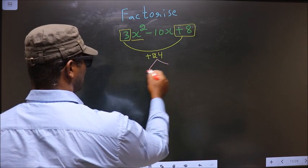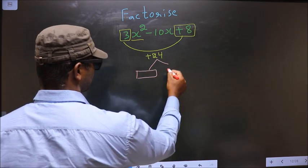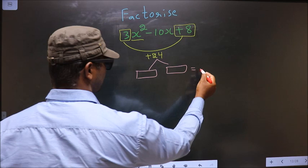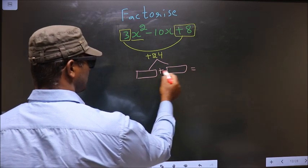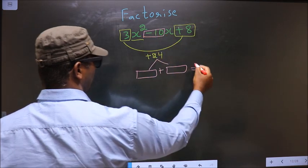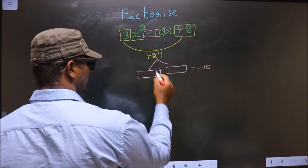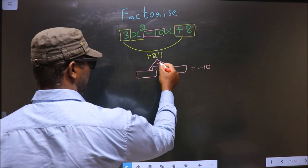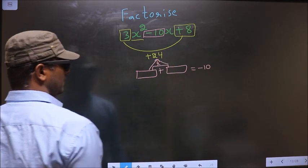Now you should look out for two numbers such that when you add these two numbers you should get the middle coefficient, that is minus 10, and also when you multiply you should get plus 24.